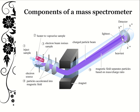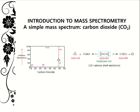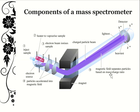Separation happens from lightest to heaviest, which is why on our spectrum we see the molecular ion compared to the smaller fragments at the other end — as we saw with carbon dioxide, the greater mass here and the lower mass there — because the magnetic field separates the particles based on the mass-to-charge ratio.